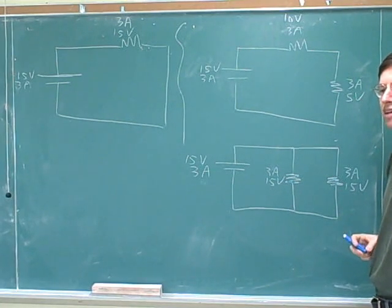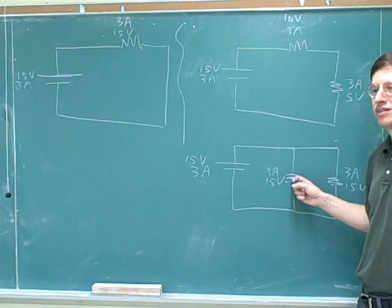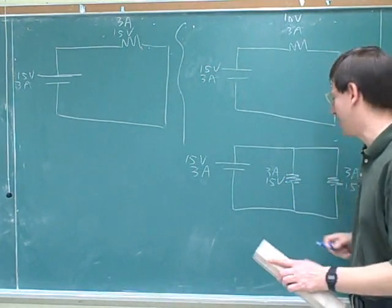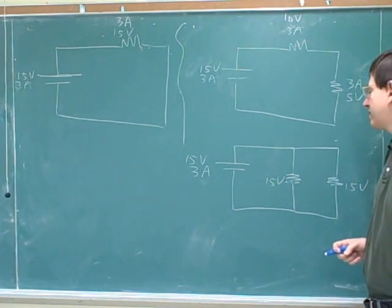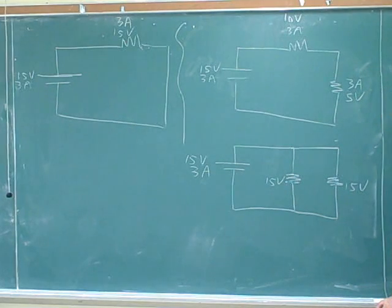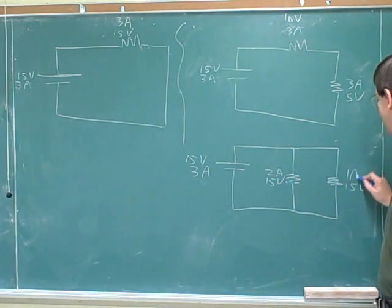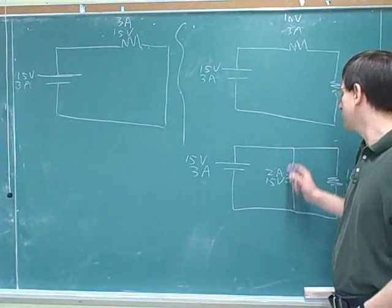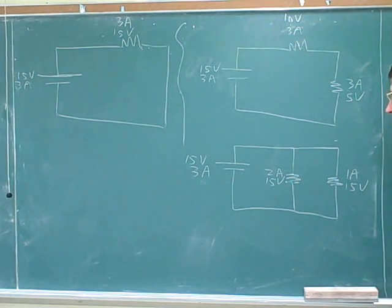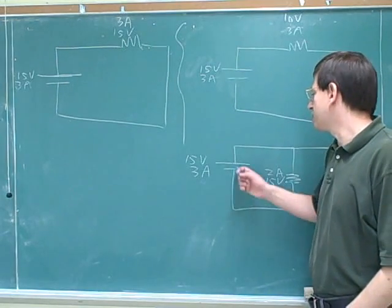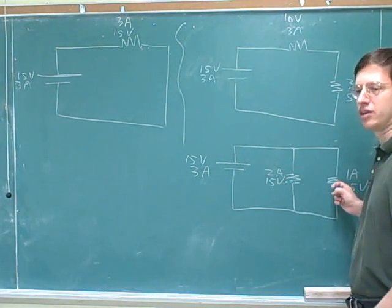Now let's think about the current again using the ski lift analogy. There are three skiers per second coming off the top of the ski lift — does that mean there must be three skiers per second going through each path? No, because there are two different paths. So we have to revise our first guess about the current. We can't get a precise number, but we can say something about the relationship: if there are two amps going through one branch, the other must be one amp. If three skiers per second come off the lift and two take this path, that leaves one per second for the other path. The water analogy also works well — if pumping three liters per second and two liters go down one path, one liter goes down the other.